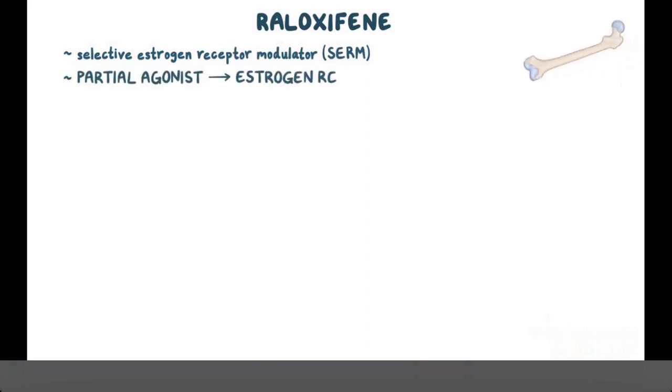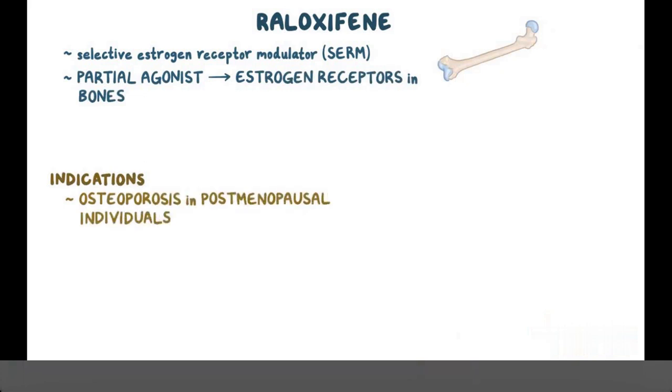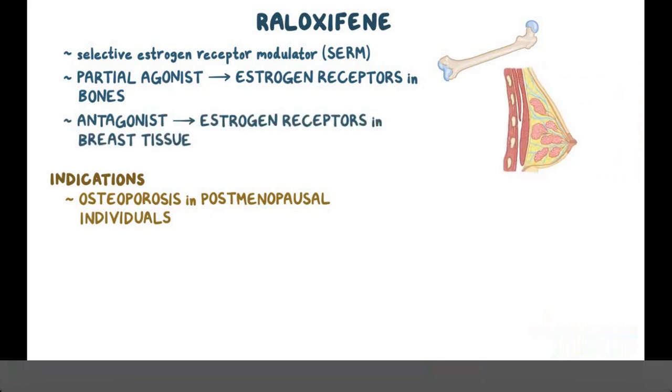Okay, last but not least we have raloxifene. Raloxifene is a selective estrogen receptor modulator, or for short SERM, which has a partial agonist effect on estrogen receptors in bones, so it's useful in the treatment of osteoporosis in postmenopausal individuals. But besides being a partial agonist of estrogen receptors in bone tissue, raloxifene is also an antagonist of these receptors in breast tissue, so it can also be used in the prevention of breast cancer.